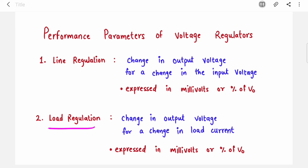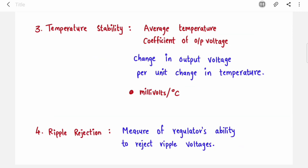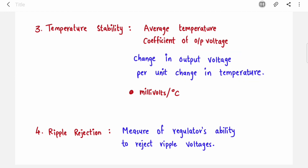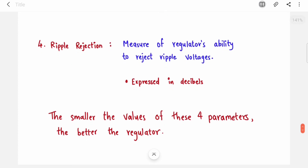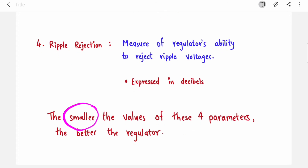The second parameter is load regulation — defined as the change in output voltage for a change in load current; this should also ideally be zero. The third parameter is temperature stability, also called the average temperature coefficient of output voltage — it is the change in output voltage per unit change in temperature, expressed in millivolts per degree Celsius. The fourth parameter is ripple rejection — a measure of the regulator's ability to reject ripple voltages from the input, expressed in decibels. The smaller the values of these four parameters, the better the regulator.